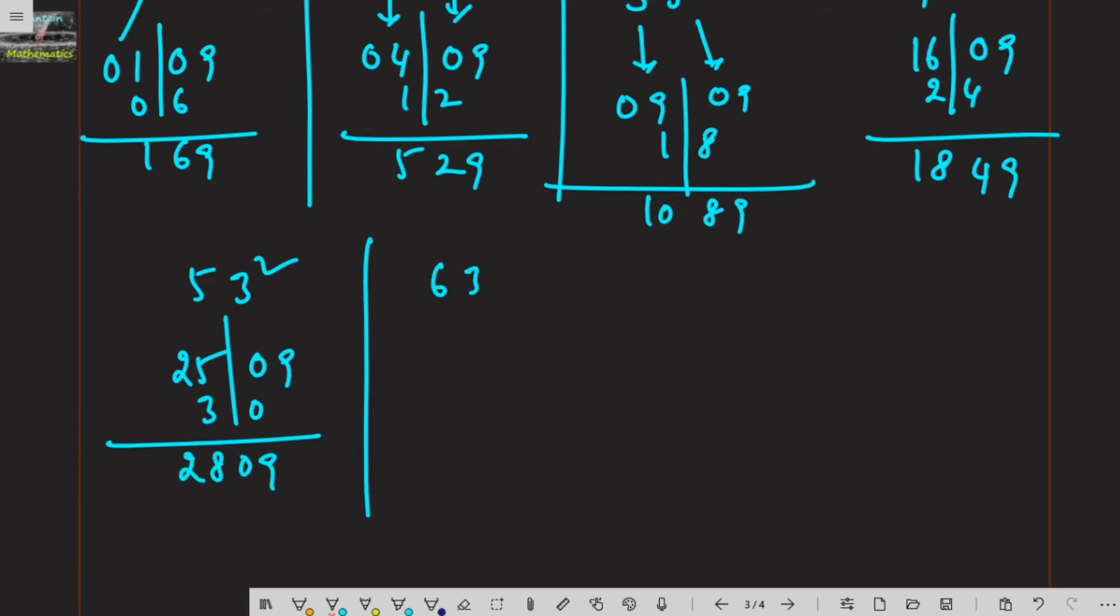63 square: 6 square is 36, 3 square is 09, and 6 into 6 is 36. So your answer is 3,969 and 73 square: